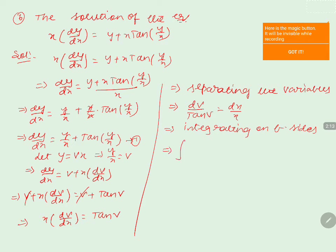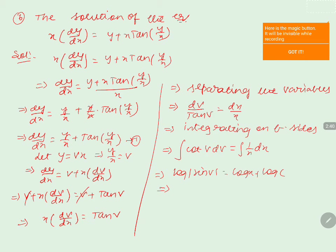When we integrate on both sides: integral of cot(v)·dv = integral of (1/x)·dx. The integral of cot(v) is log|sin(v)|, and the integral of 1/x is log(x). Since both terms are in the form of log, we add the constant as log(c). Using the log property log(a) + log(b) = log(ab), we get log|sin(v)| = log(cx).